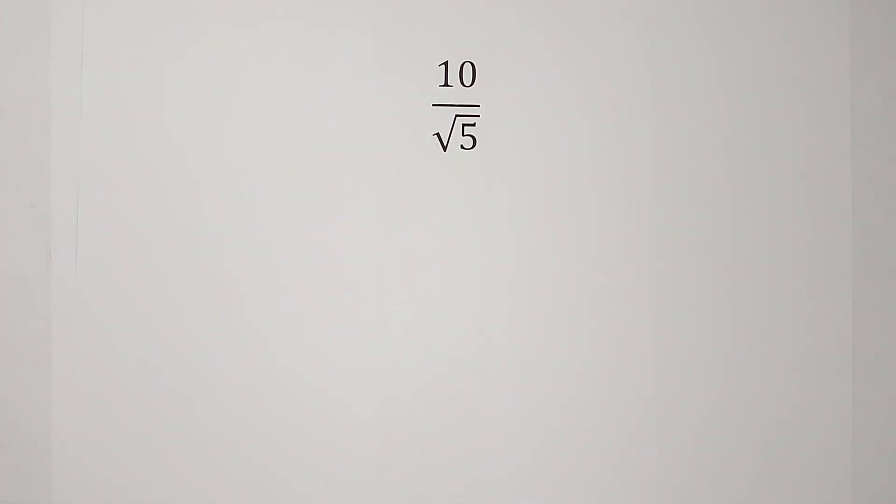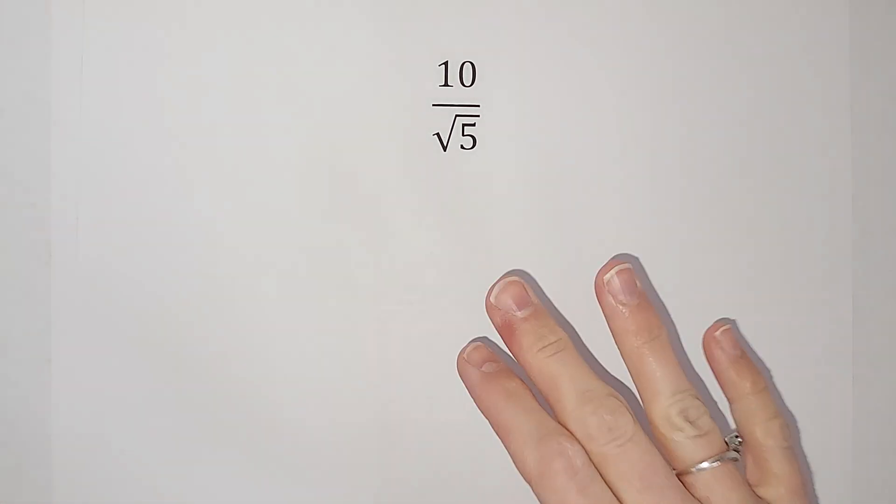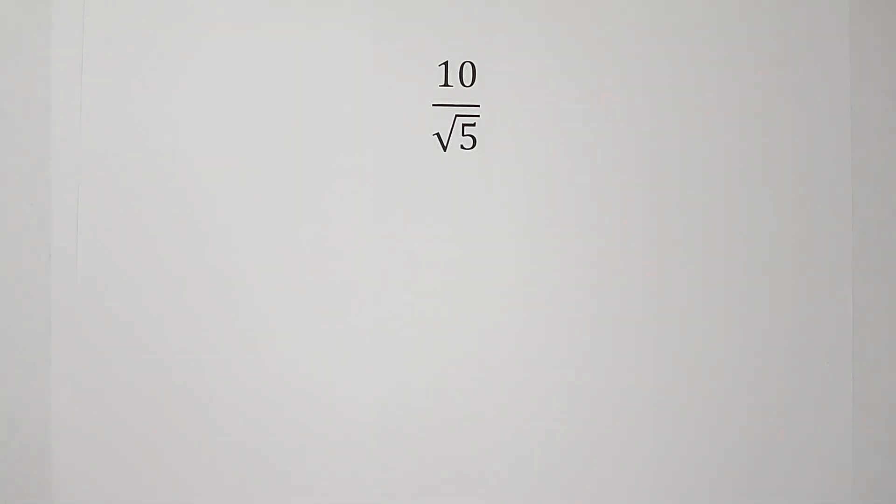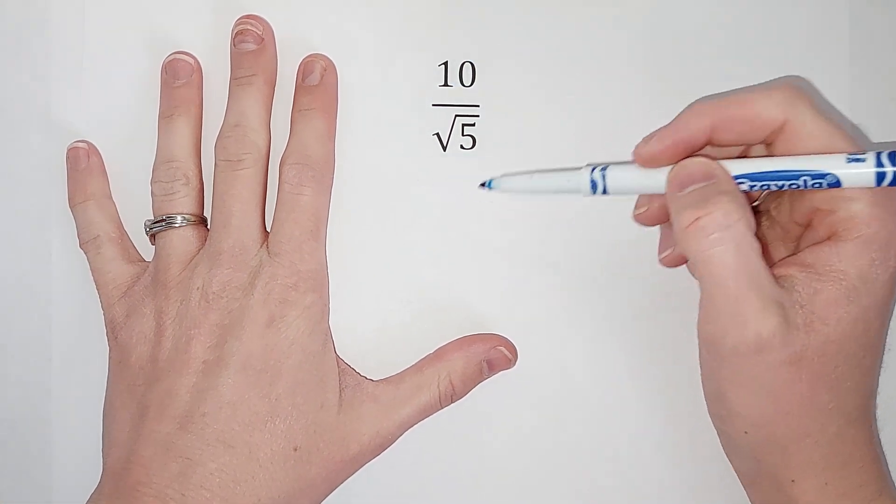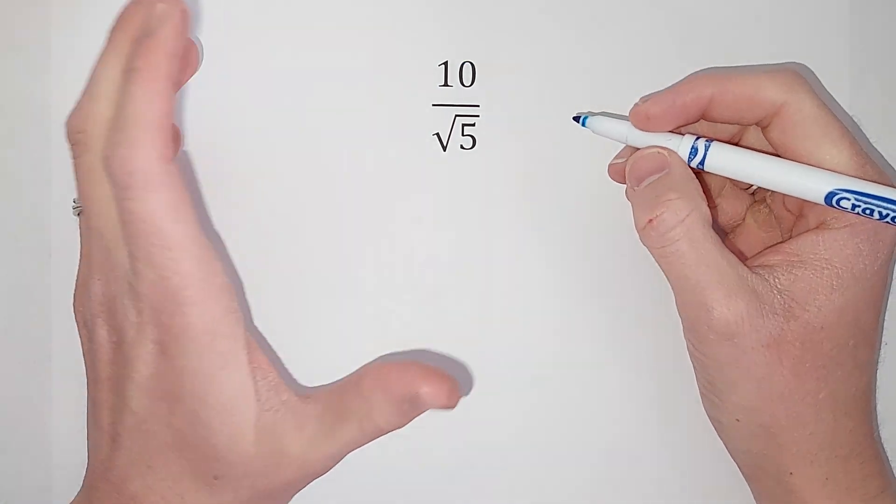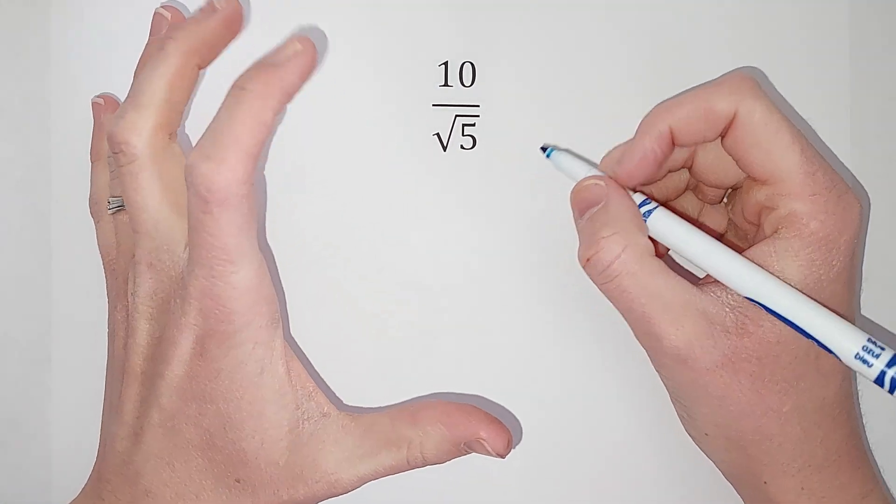A little secret for you: we do not like square roots in our denominator. It's very uncomfortable for us. So if you ever finish a problem and you get an answer like this, you're going to want to get the square root out of the denominator.